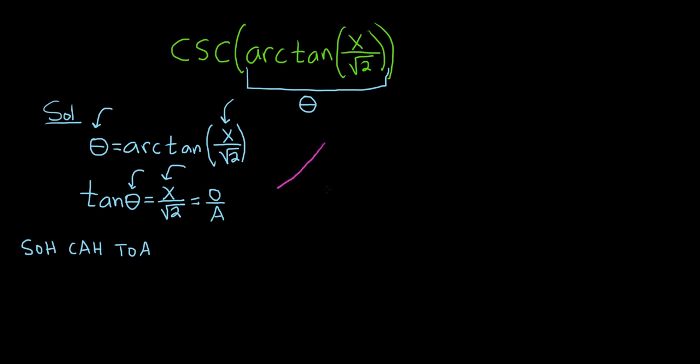And so now we draw a beautiful triangle for theta. And these are always the steps, by the way. Every time you do one of these problems, step one, you call it theta. Use the fact that they're inverse functions. Use SOH-CAH-TOA and draw a triangle, so this is theta.